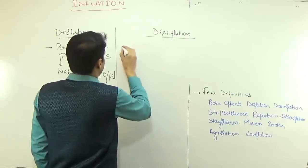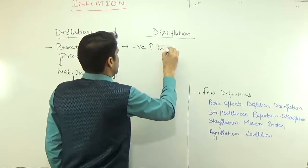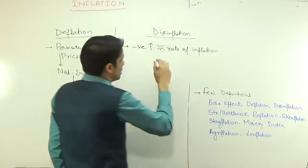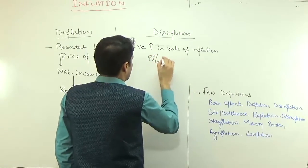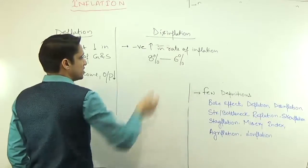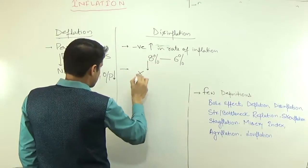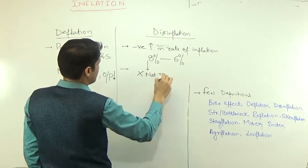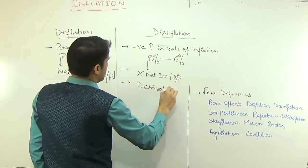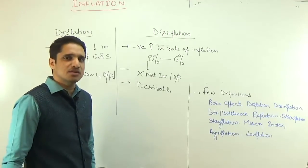On the other hand, disinflation means a negative increase in the rate of inflation — not negative inflation, but a negative increase in the rate of inflation. Suppose earlier the rate of inflation was 8% and now it has become 6%, so there is a negative increase of minus 2%. But still inflation is positive. Under disinflation, national income and output have not decreased, so it is desirable — it is good for any economy. Disinflation is a decrease in the rate of inflation.